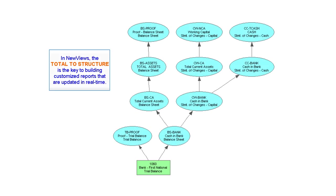In New Views, the Total To structure is the key to building customized reports that are always updated in real time. In this example, we are looking at the Total To structure of account 1060, a bank account. On the trial balance, we can see that the balance of account 1060 flows in two directions simultaneously. This bank account totals to the proof account, and at the same time totals to an account called Cash and Bank on the balance sheet. This is called the rippling effect.